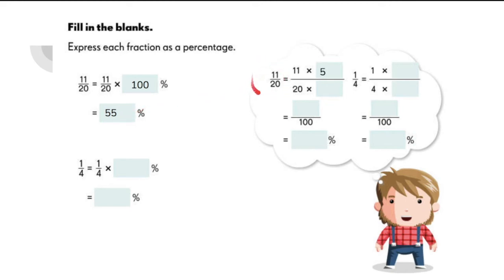Now, this time, let's do method 1. 11 out of 20, we multiply the numerator and the denominator by 5 so that our denominator will be equal to 100. So 11 times 5 is equal to 55 over 100 or simply 55%.